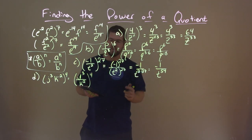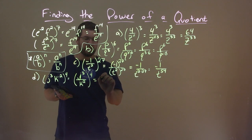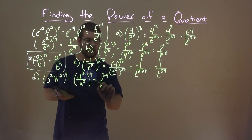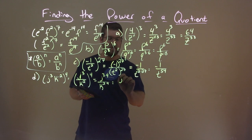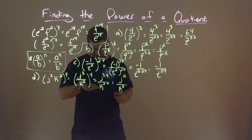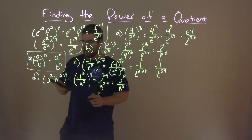Now we use the power of a quotient. Multiply it out. That's j to the 3 times 4 power over k to the 2 times 4 power. Simplify. 3 times 4 is 12. So we have j to the 12th power over k to the 2 times 4, which is 8. k to the 8th power. And there we have our answer. Not too bad.